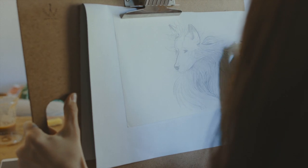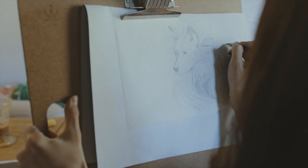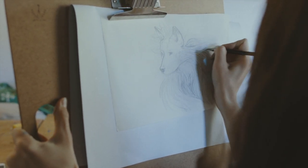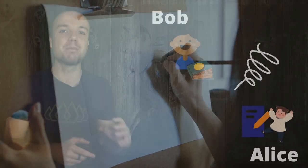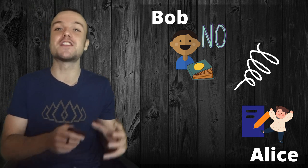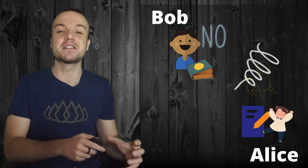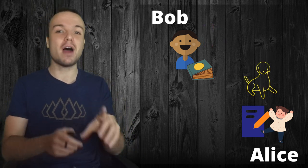Alice will have to draw the shape of a dog. She has endless attempts, and keep in mind she has never seen a dog in her life. Every time she tries, Bob — based on all the pictures of dogs in the book — will either accept the drawing if it looks similar enough to any of those dogs, or reject it. The process might take hours, days, or even weeks, but at the end, probably, Alice will be able to draw a bunch of dogs that satisfy Bob.